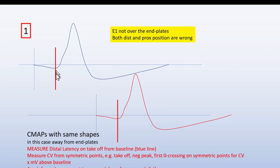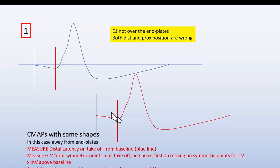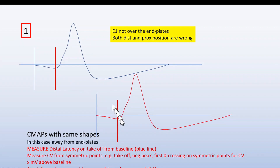Here I've set it to the positive peak here and the positive peak here. Usually the conduction velocity can be calculated very accurately, and we may have problems mainly with the distal latency. This is when the signals are identical, more or less.